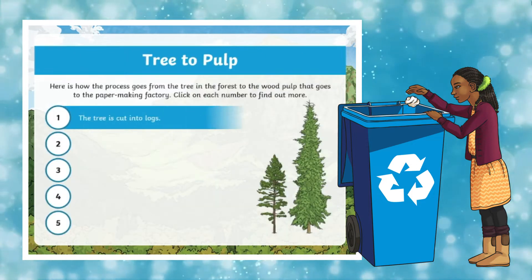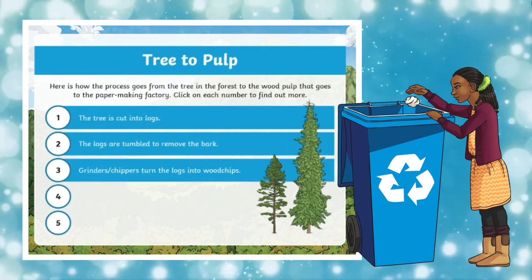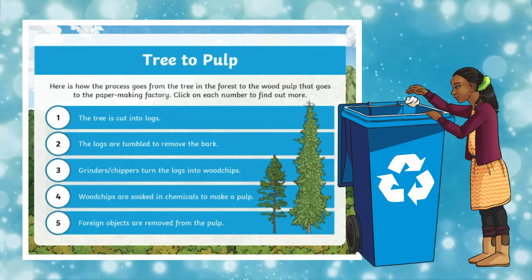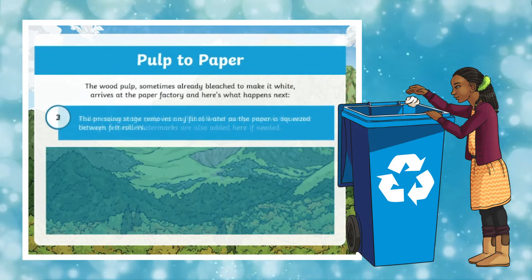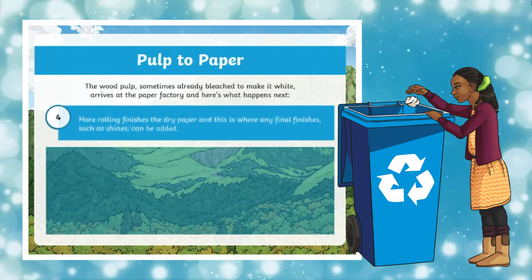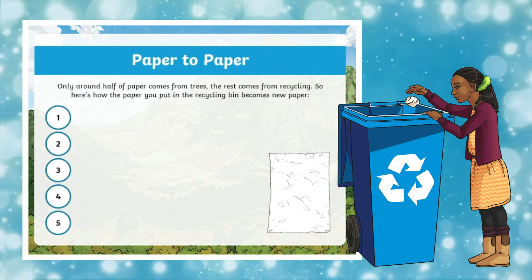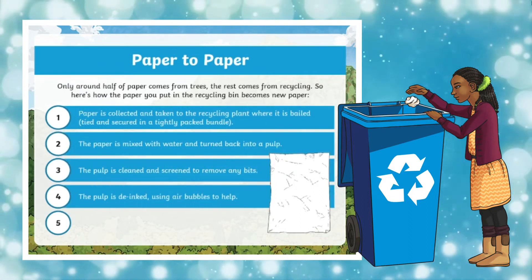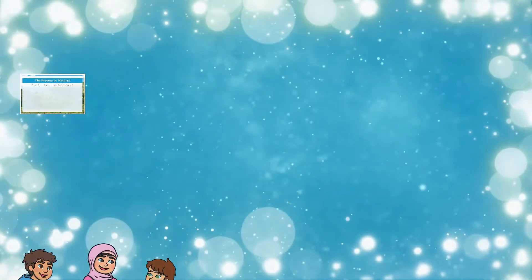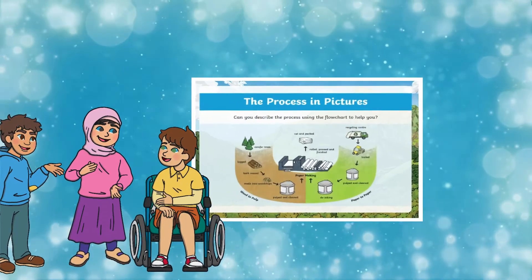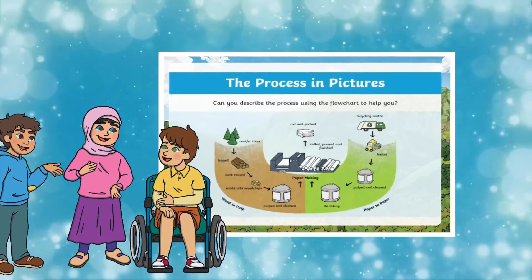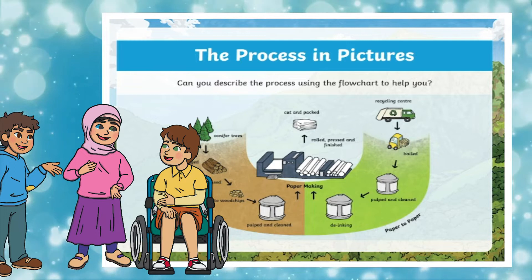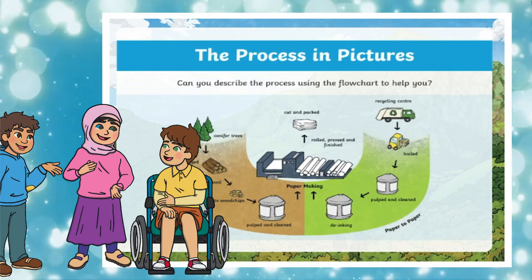Why doesn't it smell bad? Why doesn't it have other people's writing on it? Use this PowerPoint to find out all about the process of paper making from tree to paper, and also from paper to paper during the recycling process. Ask pupils in pairs or in groups if they can explain the process of paper making using this handy visual flowchart to support step by step.